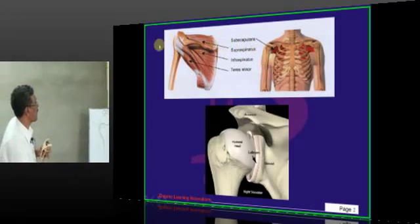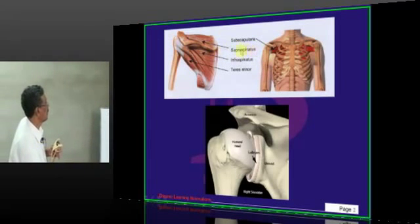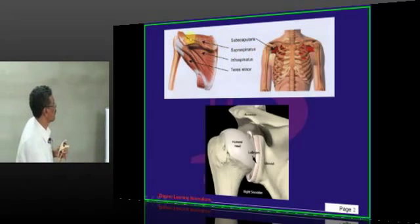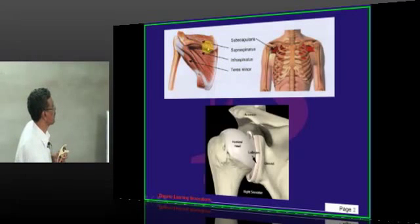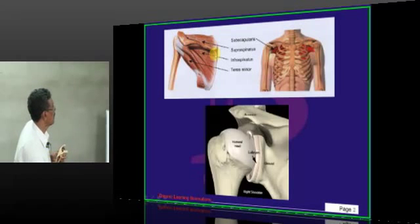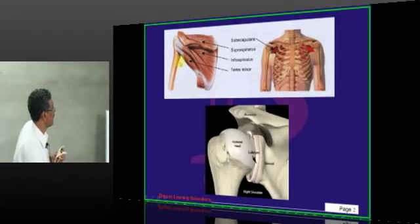Now, looking at the slides: this is the subscapularis, supraspinatus, infraspinatus, and teres minor. We are seeing subscapularis from the posterior region — it attaches anteriorly. Superiorly is supraspinatus, posteriorly is infraspinatus and teres minor, and we are viewing these from the anterior region.